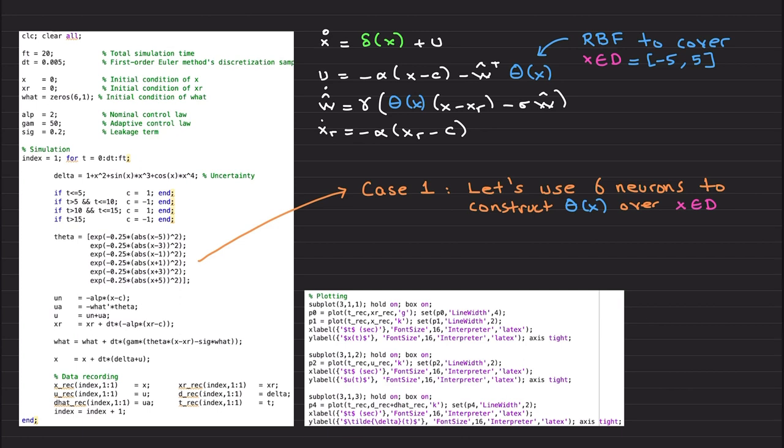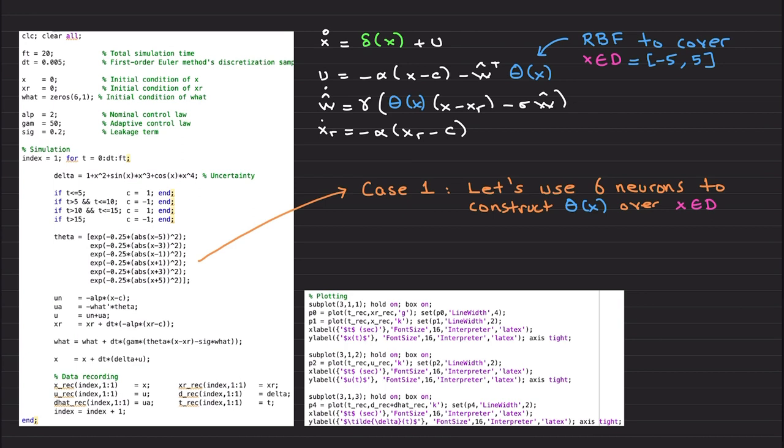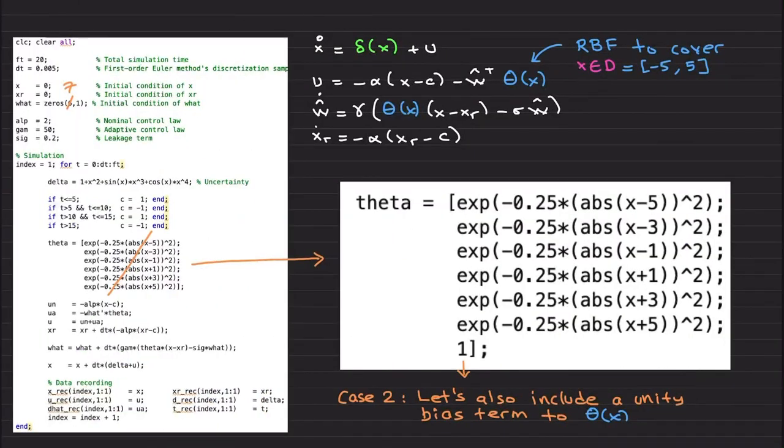However, you need to understand what will happen. Case one, I just put six neurons. One of them is originated at 5, the other one is at -5, -3, -3, -3. So basically pictorially, one of them is originated at -5, this is -3, -1, 1, 3, and 5. I basically have six neurons to cover this set. Actually, it covers slightly more than -5 to 5, it is around -7 to 7.